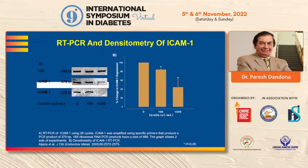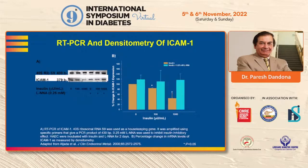ICAM1, a pro-inflammatory adhesion molecule, is inhibited by insulin in a dose-dependent fashion, as shown both by protein stain and histogram. RT-PCR looking at the mRNA also shows a dose-dependent inhibition of ICAM1 mRNA. ICAM1 is a key pro-thrombotic and pro-inflammatory molecule involved in atherosclerosis.